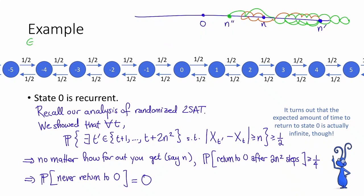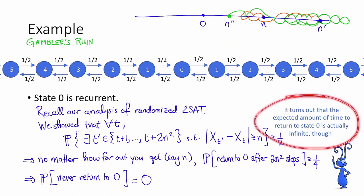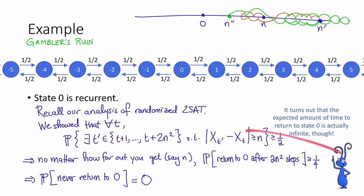This example is sometimes called the gambler's ruin. If a gambler keeps betting with 50% odds of either winning or losing a dollar, then with probability 1 the gambler will eventually go broke — they'll end up with 0 dollars. It turns out, though, in this case the expected amount of time to return to 0 is infinite. This doesn't violate our earlier observation because this is an infinite Markov chain. So while with probability 1 they will eventually go broke, in expectation it will take them infinitely long to go broke — perhaps ruined not because they go broke, but because they spend so much time gambling.